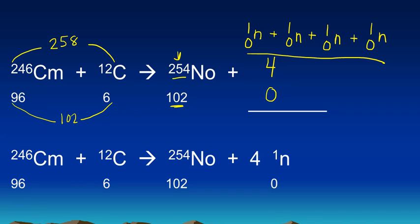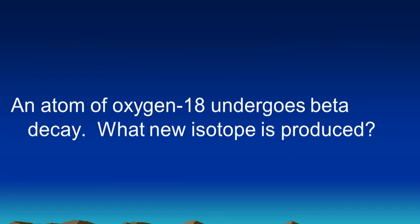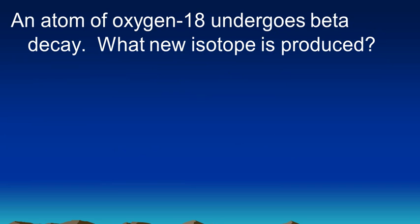Let's try one more example, perhaps a bit more complex because we have to write the equation. It says an atom of oxygen-18 undergoes beta decay. What new isotope is produced? So this time we have to write the equation, so we have to write oxygen-18. So just as we learned in an earlier lesson, oxygen is O. The 18 is the mass number and that goes on top. Now we have to refer to the periodic table to see what number goes on the bottom of this symbol.